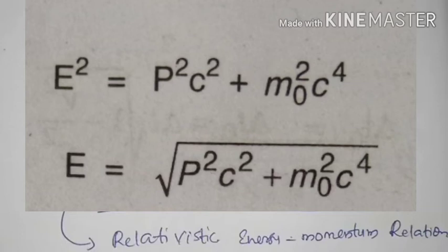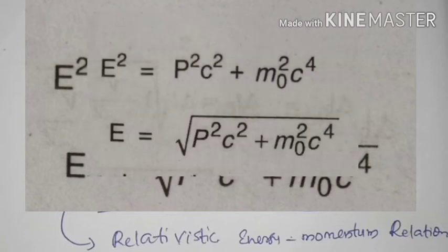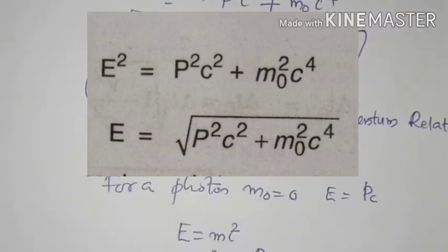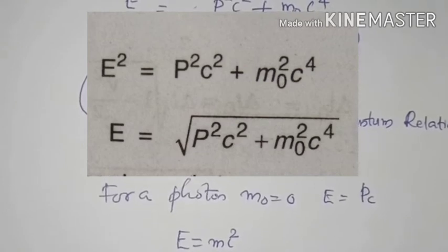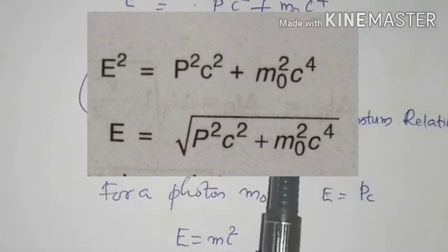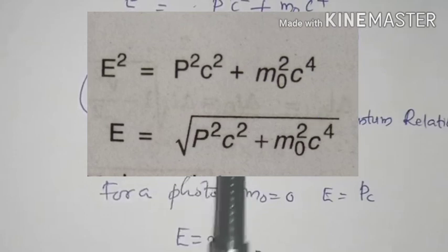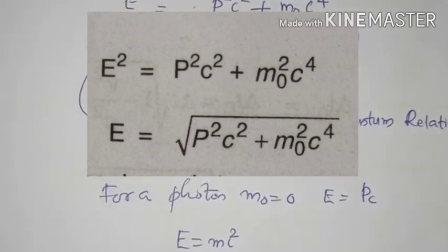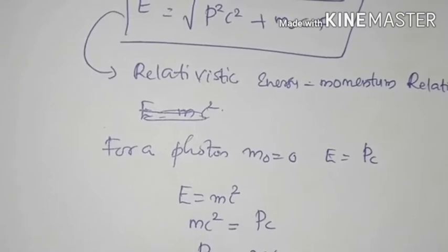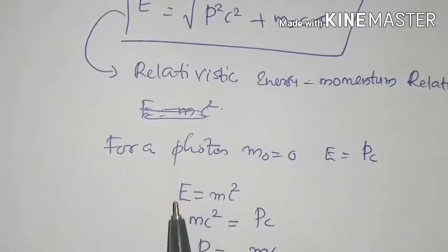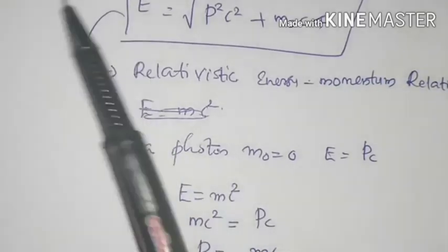Now consider a photon, whose rest mass m₀ is equal to zero. Substituting m₀ equals zero into the relativistic energy-momentum relation gives E equals the square root of p²c², so E equals pc. Recalling that E equals mc², this gives the relation between energy and momentum for a photon.